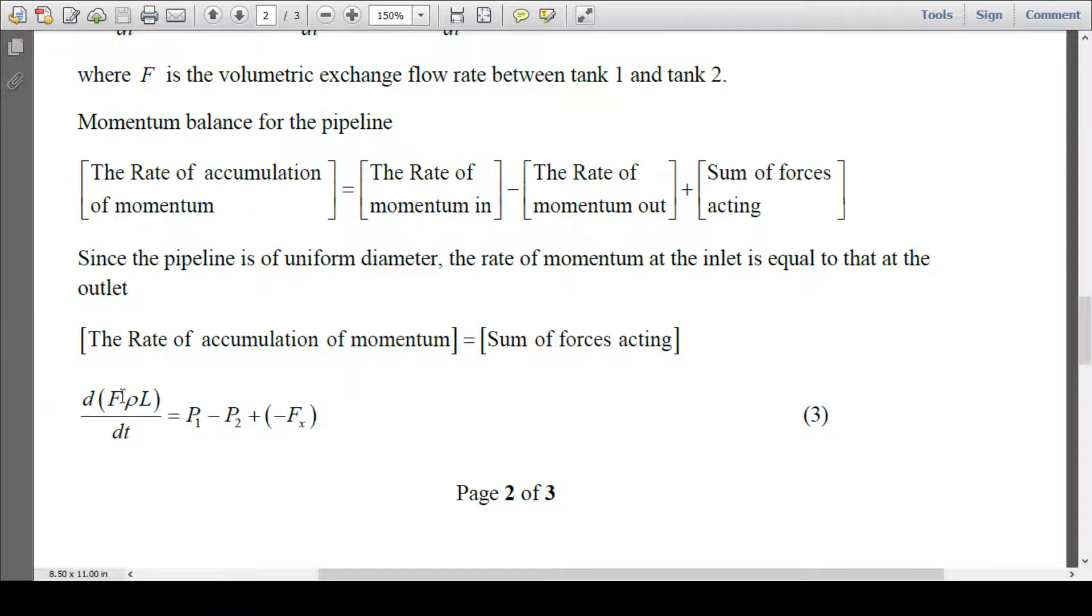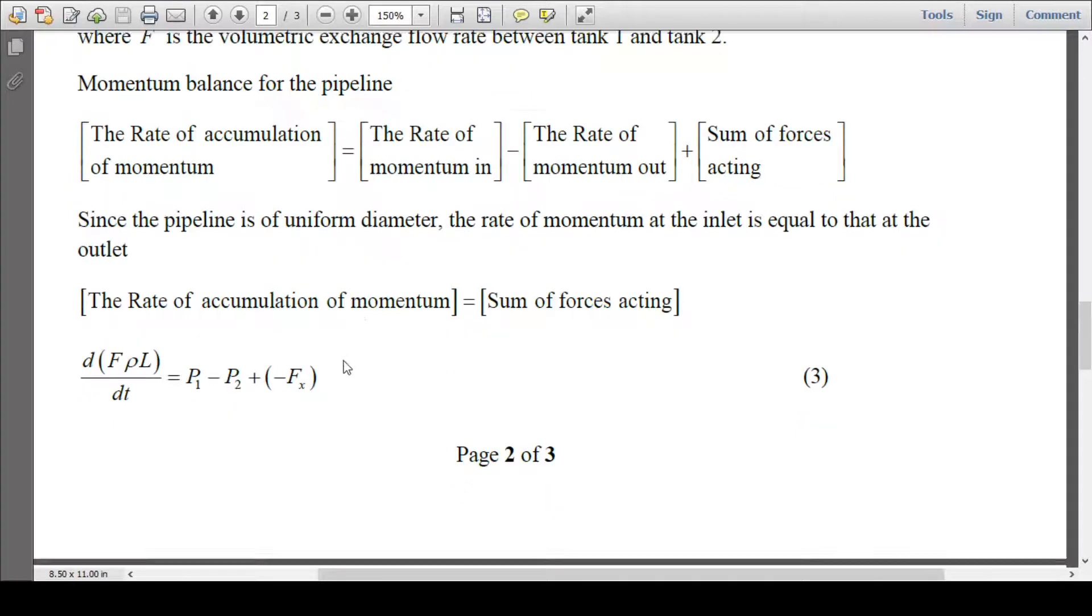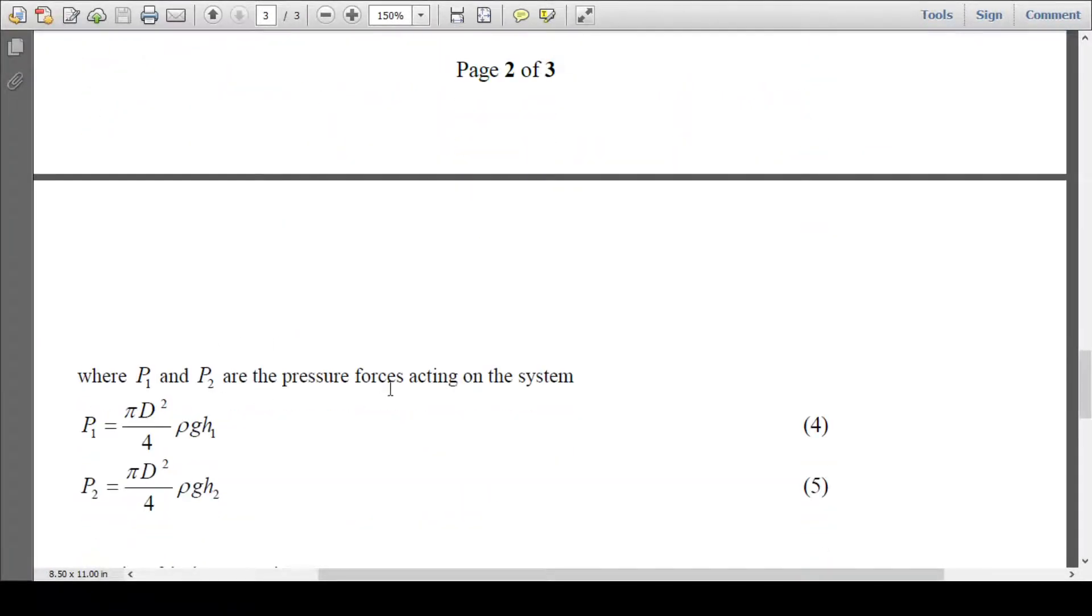Rate of momentum accumulation is d(rho f L)/dt equals p1 minus p2 minus fx, where p1 and p2 are the pressure forces acting on the system. p1 would be calculated by the cross sectional area multiplied by rho g h1. Same thing here, cross sectional area multiplied by rho g h2. This is the pressure force, pressure at the bottom multiplied by the diameter of the pipeline.